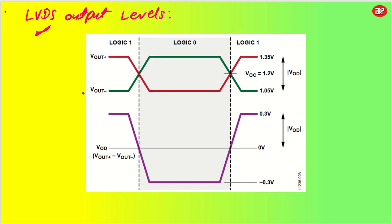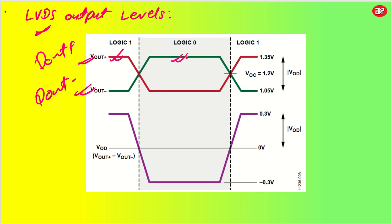If you talk about output levels: we have V output plus and V output minus — D out plus and D out minus. Logic one means V output plus will be high, and logic zero means V output plus will be low. The green is D out minus — so when negative is high it means logic zero, and when positive is high it means logic one. Since it is differential, the difference is between the two — for example 1.35 V minus 1.05 V gives a difference of 1.2 V. The differential signal has no ground reference; you consider the difference between the two signals.